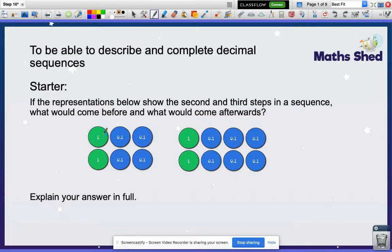So this representation has two ones and four tenths, so that shows 2.4. And this representation has two ones and six tenths, so it shows 2.6. So what would come next in this sequence? I have to think to myself, how would I get from 2.4 to 2.6? To get from there to there, I would add on 0.2. You had 4 tenths, now you've got 6 tenths, so you've added on 2 tenths.